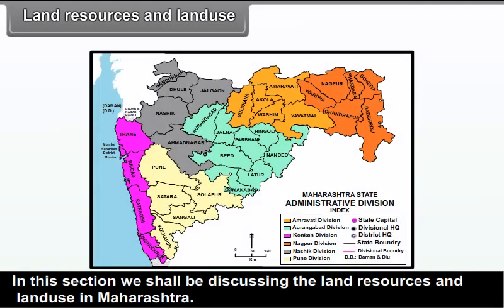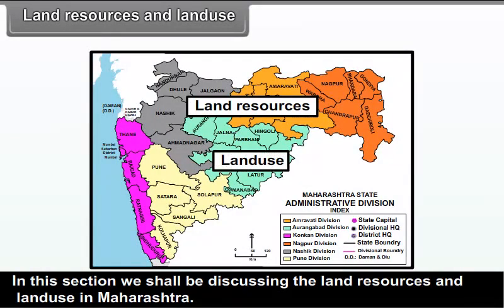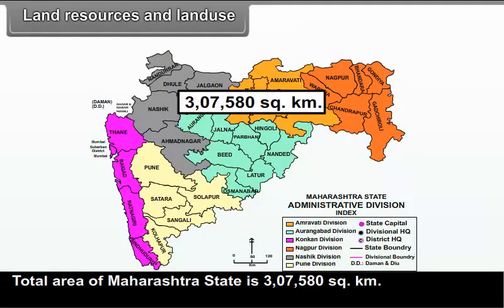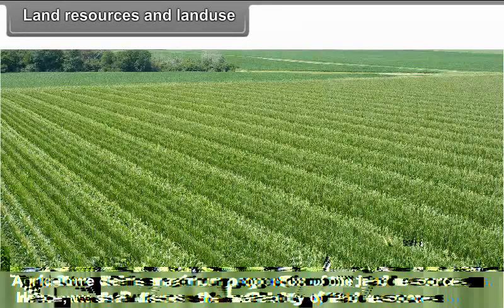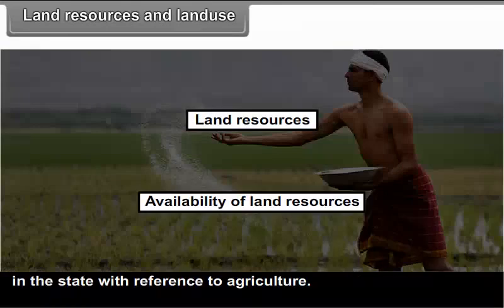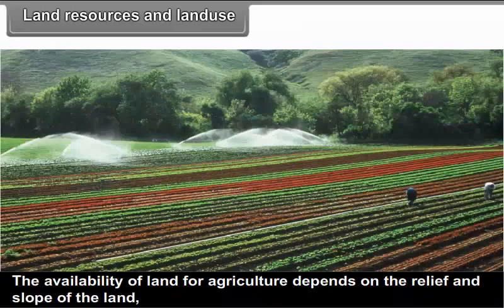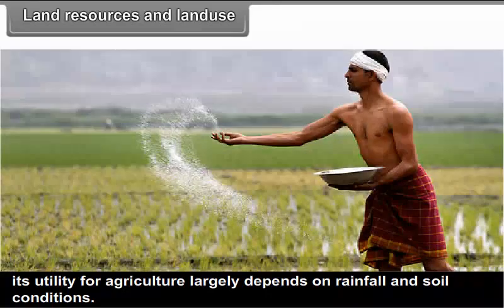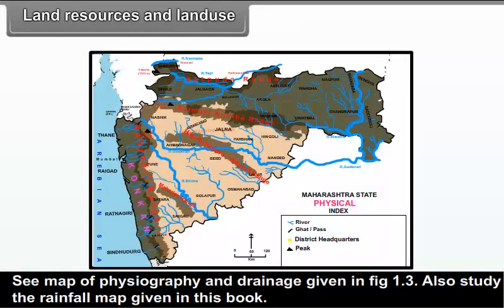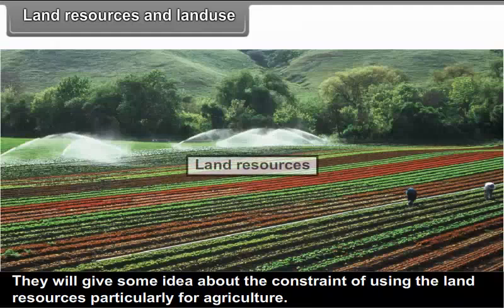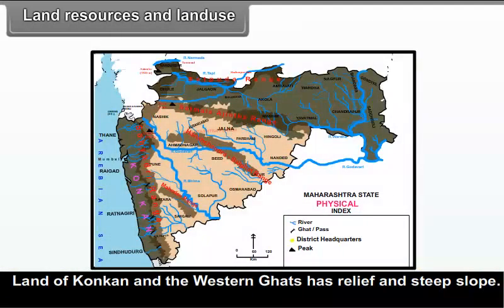In this section, we shall be discussing the land resources and land use in Maharashtra. Total area of Maharashtra state is 3,75,800 square kilometers. Agriculture claims the maximum proportion of the land resources. Hence, we shall discuss the availability of land resources in the state with reference to agriculture. The availability of land for agriculture depends on the relief and slope of the land, and its utility for agriculture largely depends on rainfall and soil conditions.